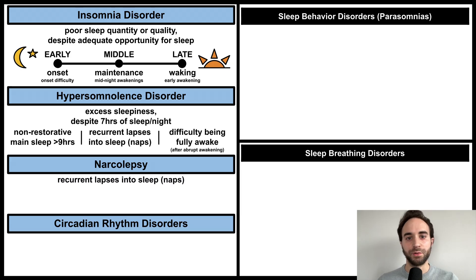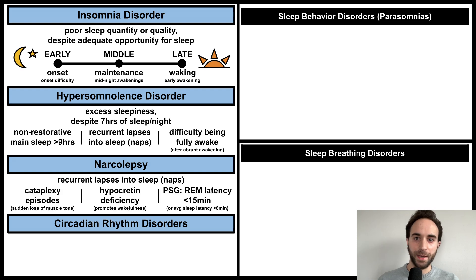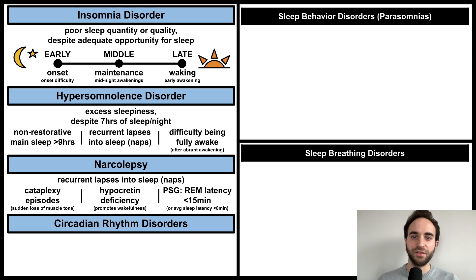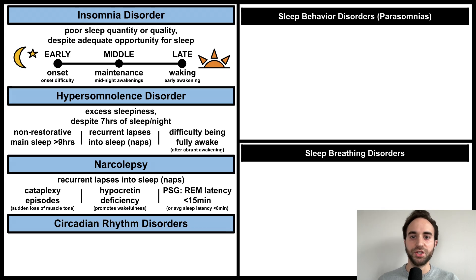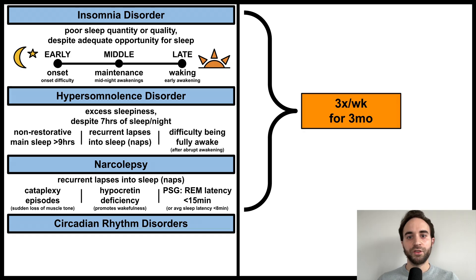Narcolepsy involves recurrent lapses into sleep, associated with one of three characteristics: cataplexy episodes, which refer to a sudden loss of muscle tone; deficiency of hypocretin, a neuropeptide that promotes wakefulness; or a sleep study showing a REM sleep latency of less than 15 minutes, meaning the patient passes very quickly into REM sleep. For each of these disorders, the sleep problem must occur at least three times per week, for three months.